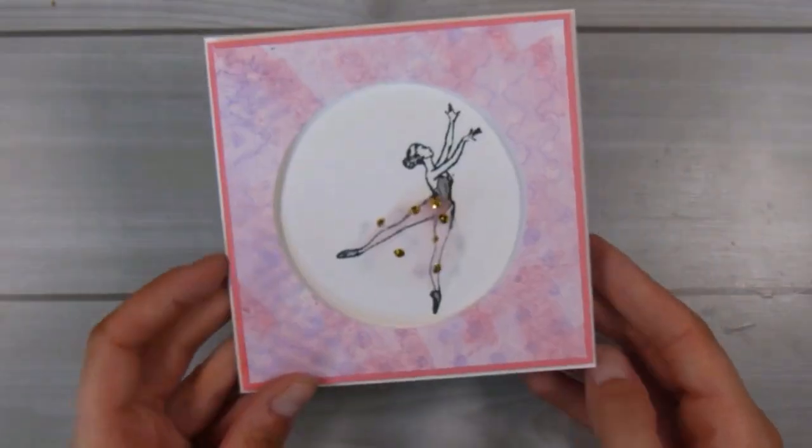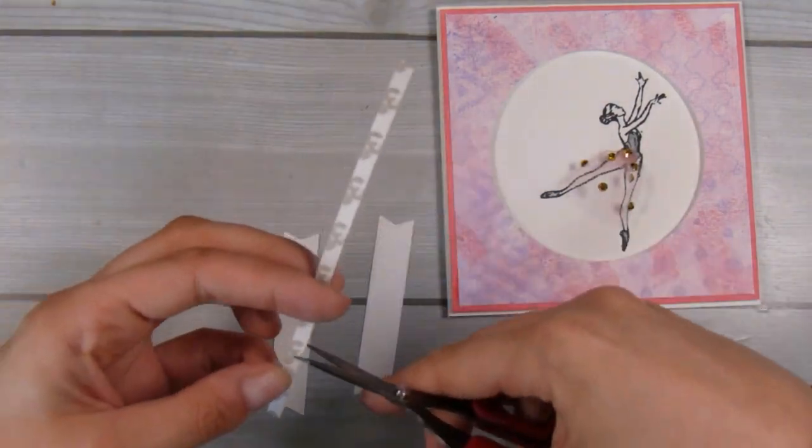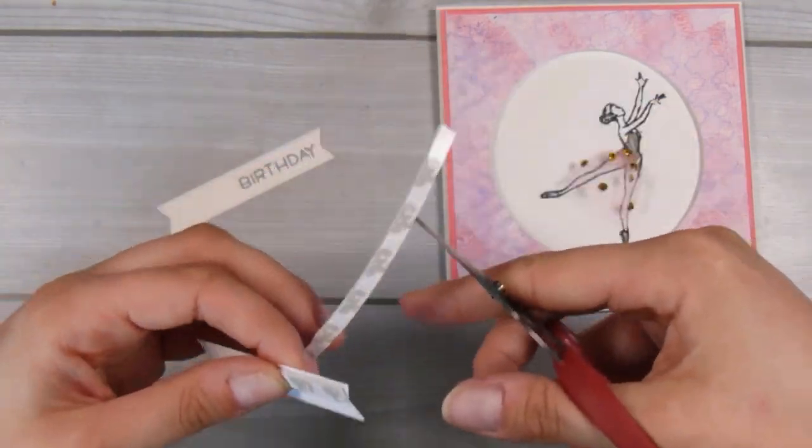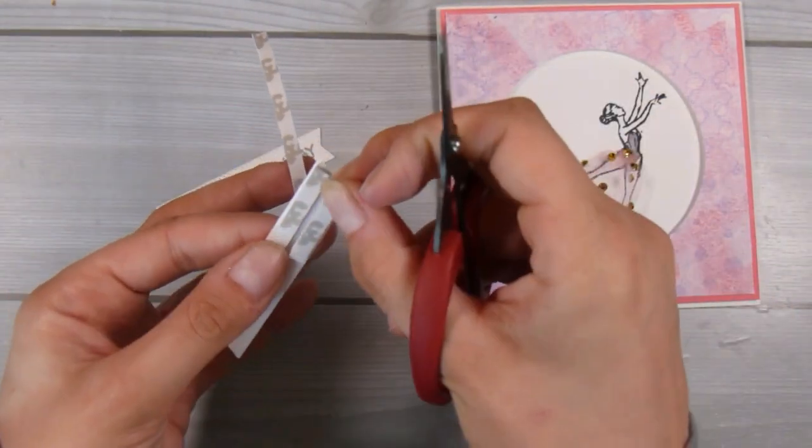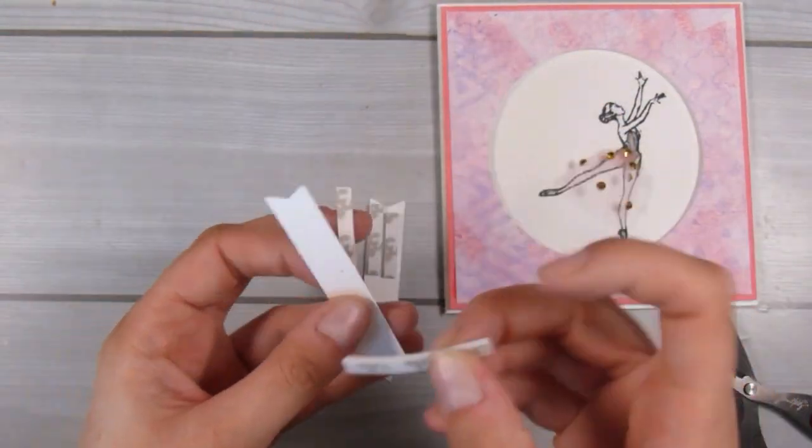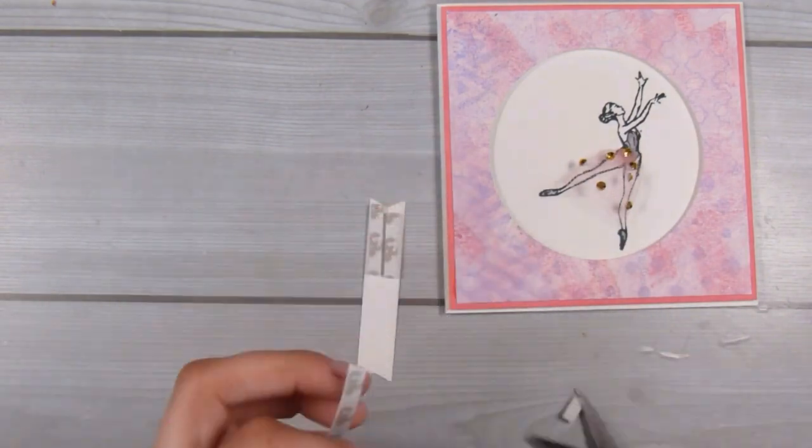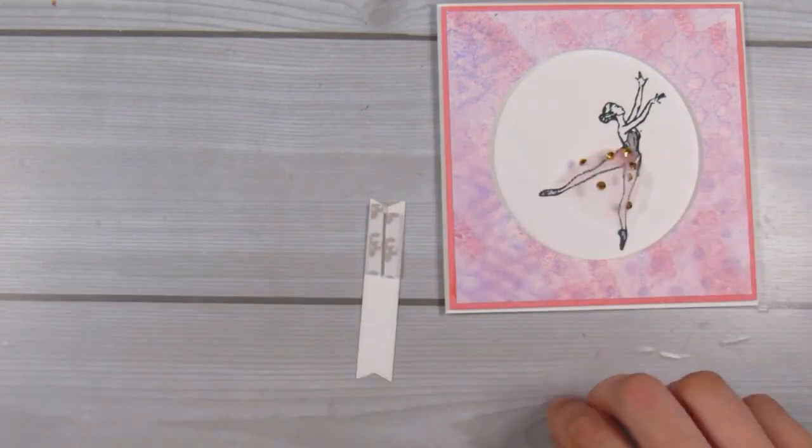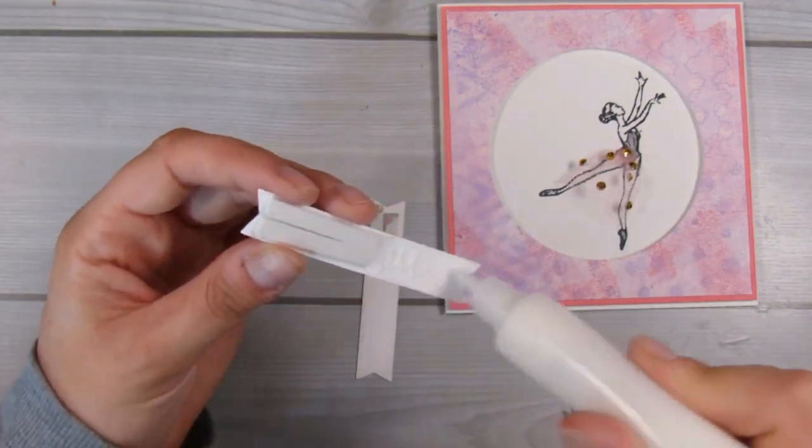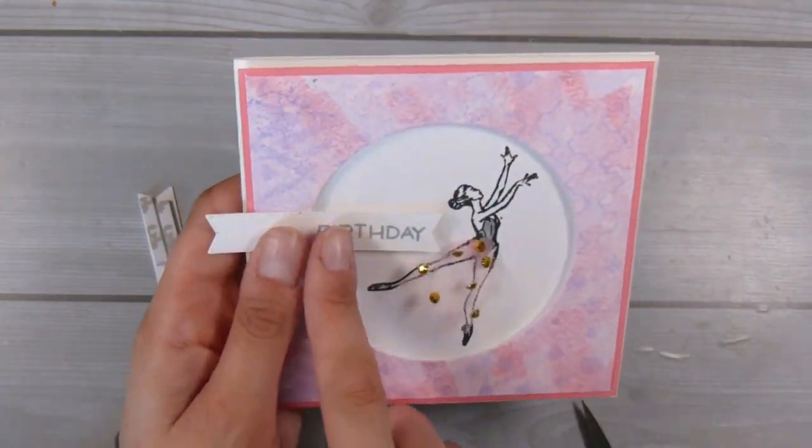I have adhered it down to a 110 pound Neenah Solar White card base and here I'm just going to put a little bit of foam tape on the right hand side and then I'm actually going to just use some liquid glue on the left hand side because it is going to sit flat and even with the raised portion of the card already. That pretty much finishes off the card, this is a nice simple relatively quick and easy project.